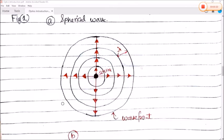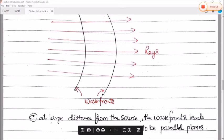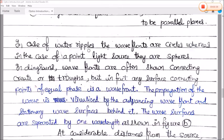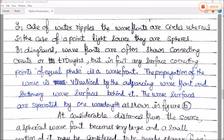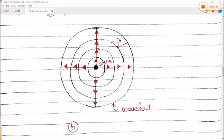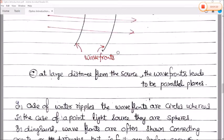These are the examples of spherical wavefront and this is the long range wavefront. At a large distance from the source, the wavefront seems to be taken as parallel wavefront. In the case of water ripples, the wavefronts are circles, whereas in case of point light source they are spheres. In diagrams, wavefronts are often drawn connecting the crest or trough, but in fact any surface connecting points of equal phase is a wavefront. The propagation of wave is visualized by the advancing wavefront and the stationary wave surface behind it. The wave surfaces are separated by one wavelength as shown in figure B.